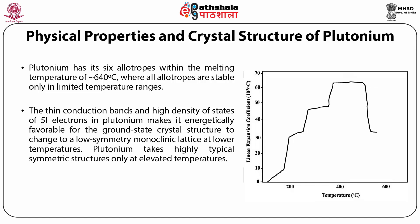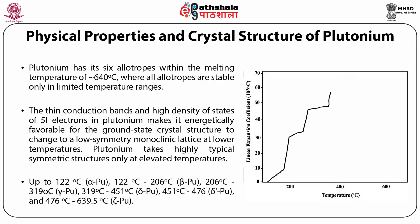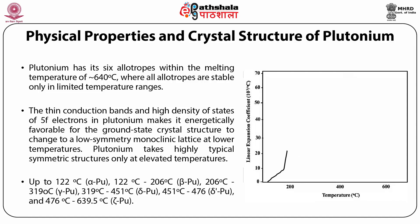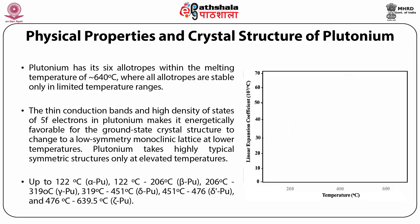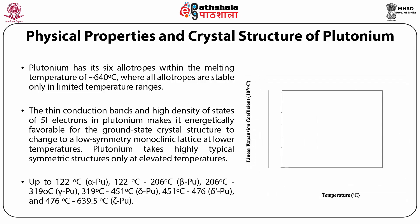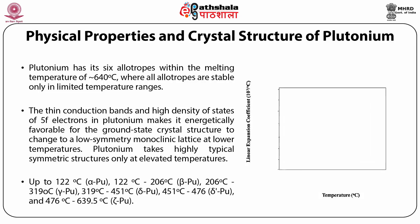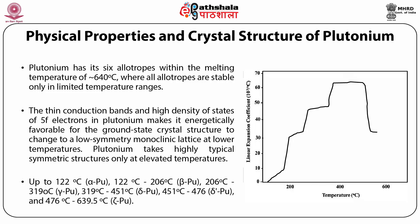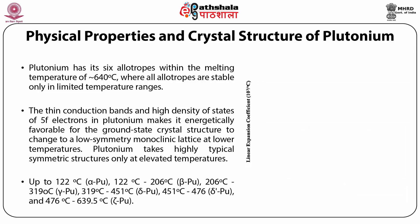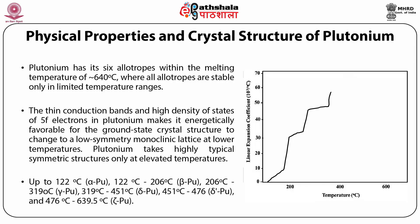Plutonium takes highly typical symmetrical structures only at elevated temperatures. Up to 122°C, plutonium is called the alpha phase, which adopts a simple monoclinic crystal structure with a density of 19.816 g/cm³. Within 122 to 206°C, it assumes a body-centered monoclinic crystal structure with 34 atoms per unit cell. From 206 to 319°C, plutonium exhibits a face-centered orthorhombic structure with 8 atoms per unit cell, denoted as gamma-Pu.